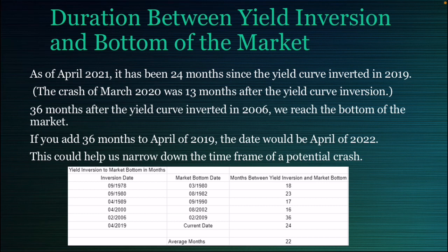If you take a look at 2006, 36 months after the yield curve inverted, we reached the bottom of the market. If you add 36 months to April of 2019, the date would be April of 2022. This could help us narrow down the time frame of a potential crash. The average duration between when we inverted and the bottom of the market was 22 months, and we're currently at 24 months — but keep in mind, we have a lot of stimulus pushing the market up.